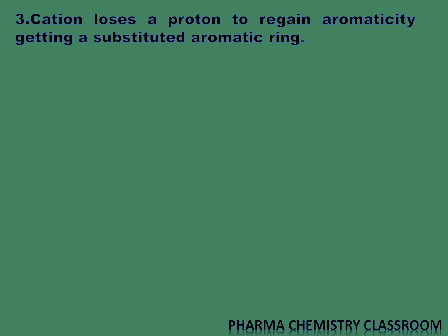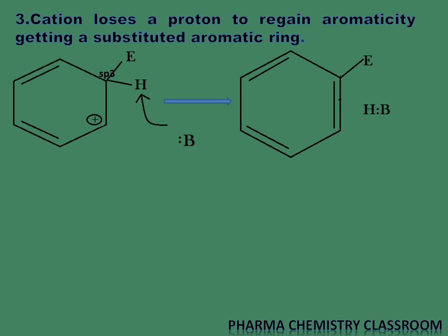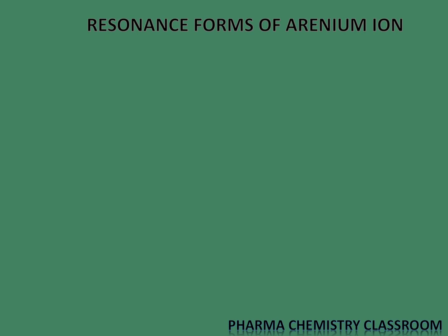In the third step, the formed cation loses a proton to regain aromaticity and give the substituted aromatic ring. A base abstracts the proton from the sp3 hybridized carbon on which the electrophile is attached. The proton is abstracted by the base present in the system, and we get a protonated base and the substituted ring — completing the electrophilic aromatic substitution reaction.